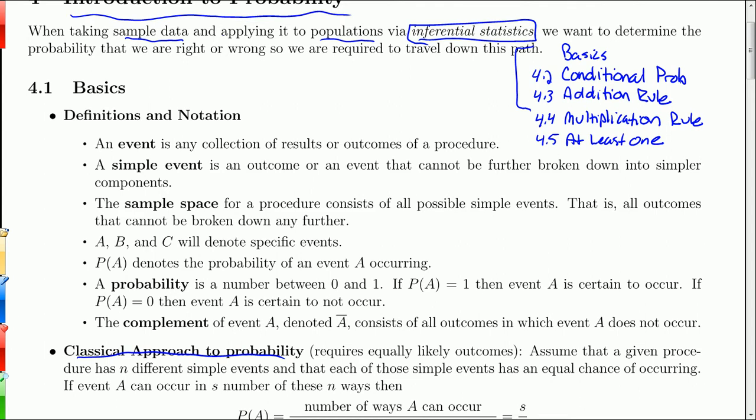And then in Section 4.2, we do conditional probability. And that's pretty important when we start doing inferential statistics when we talk about a significance level which is, in fact, a conditional probability itself.